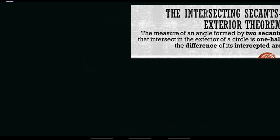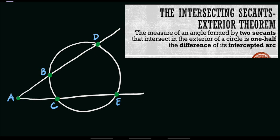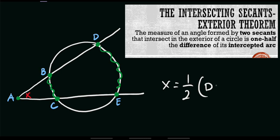For example, let's say we have this given circle. If we have this intersecting secants exterior theorem and we have this exterior angle A, let's name it x. If you want to solve for the value of x, that means x is equal to one half of the difference of their intercepted arcs. Our first intercepted arc here is arc DE, the bigger one, and arc BC. So just subtract their values — x is equal to half of the difference of DE and BC.